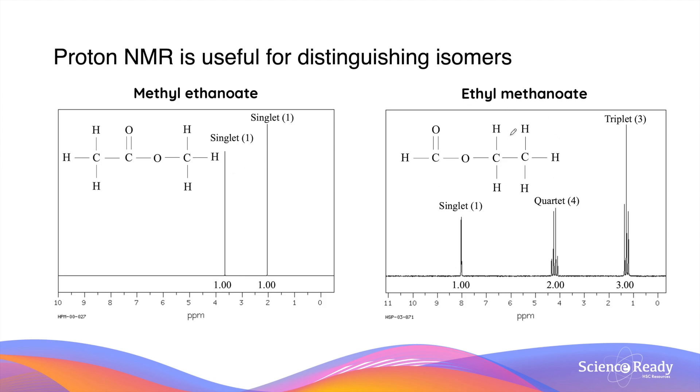In contrast, in ethyl methanoate, this compound produces three signals due to the presence of three chemical environments for its hydrogen atoms. Evidently, by examining the number of proton environments and signals in the proton NMR spectra, we can easily identify methyl ethanoate from its isomer ethyl methanoate.